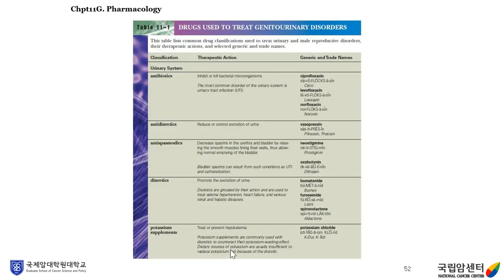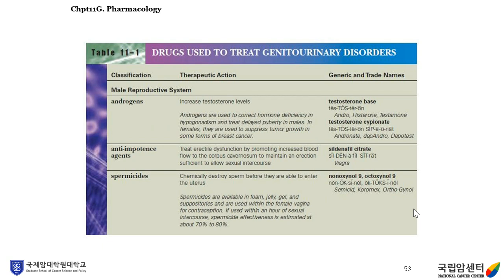Pharmacology: several drugs are used to treat genitourinary disorders. Antibiotics treat infections. Antidiuretics reduce or control excretion of urine. Antispasmodics decrease spasms in the urethra and bladder by relaxing the smooth muscles. Diuretics promote the excretion of urine. Androgens increase testosterone levels. Anti-impotence agents treat erectile dysfunction—for example, Viagra (sildenafil citrate).